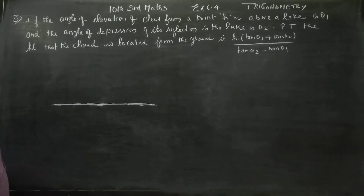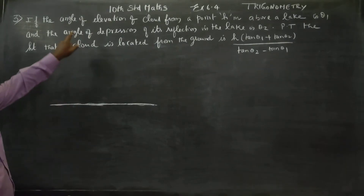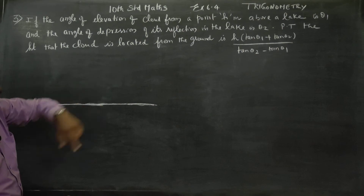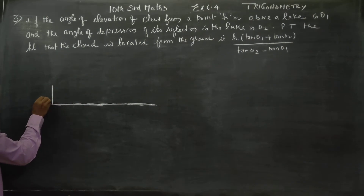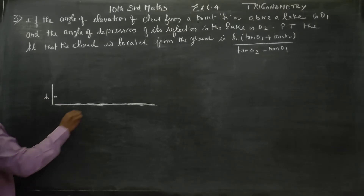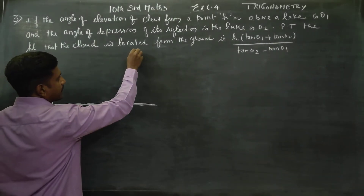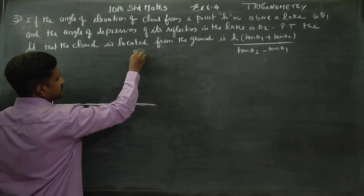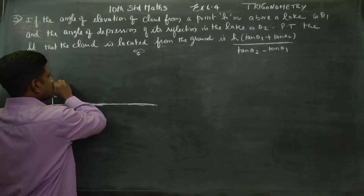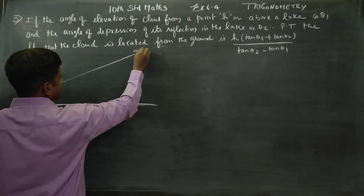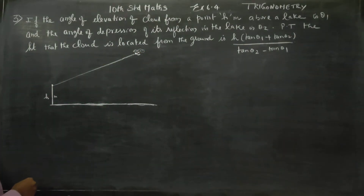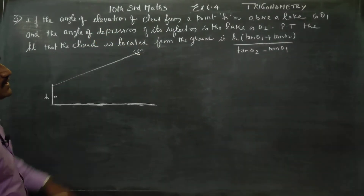The angle of elevation of the cloud from a point h meters above the lake. You can see the cloud. The angle of elevation is theta1.